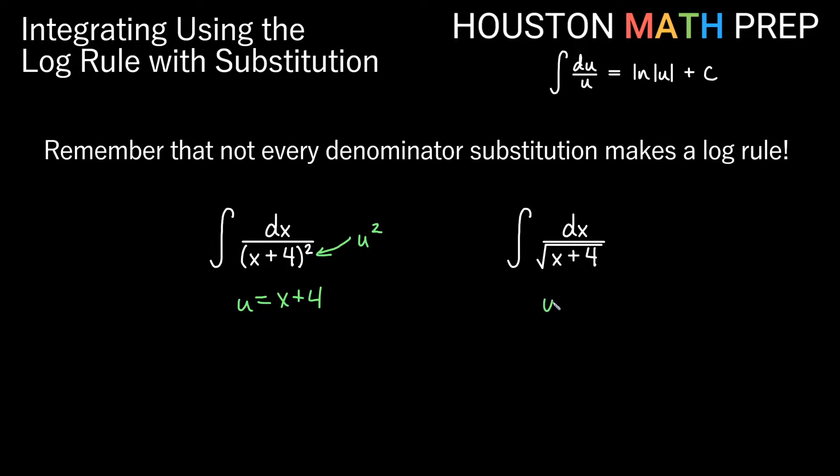Similar thing over here. We would let u equal x plus 4. For this substitution it would work nicely as well, but then you get the square root of u. Remember that's going to be u to the one half on the bottom, so this would actually be the integral of u to the negative one half. Neither of these are actually a log rule that is just strictly du over u. So be careful when you do a denominator u-substitution. It is not always a log rule.